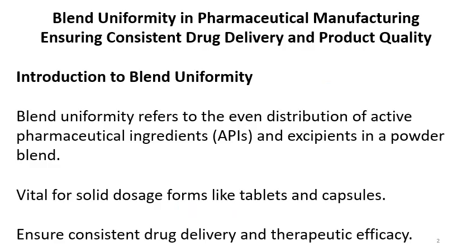Blend Uniformity in Pharmaceutical Manufacturing — Ensuring Consistent Drug Delivery and Product Quality. Blend Uniformity is an in-process testing that impacts content uniformity and is related to consistent drug delivery and product quality. Blend Uniformity refers to the even distribution of active pharmaceutical ingredients, drug substances, and excipients in the powder blend. BU is important for solid dosage forms like tablets, capsules, powders, and sachets.